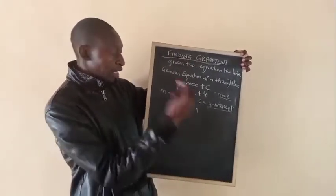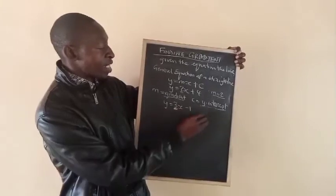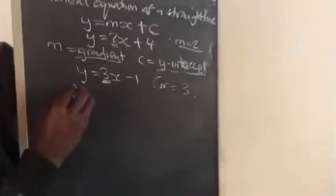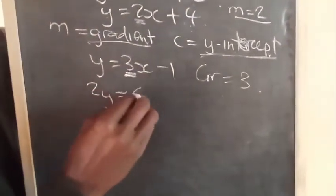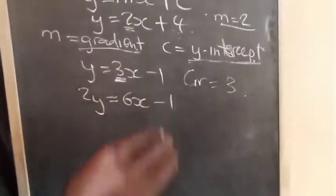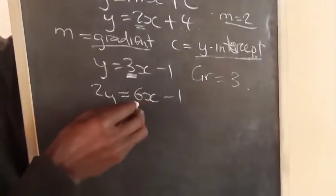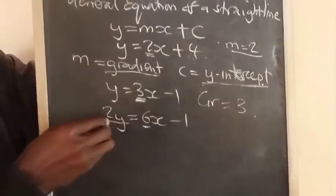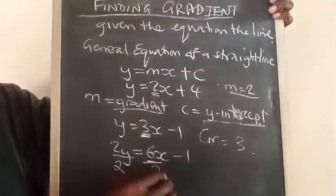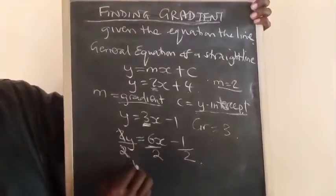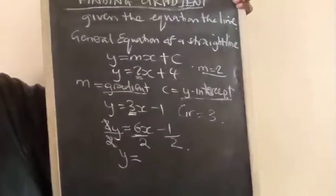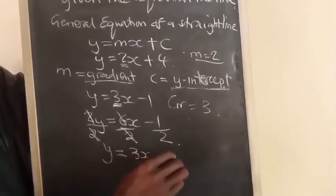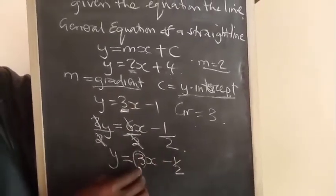Gradient equals 3. Tikapuwa equation y akanzi 2y equals 6x minus 1. Apa gradient yedu is 6. Nenye kutu ukotina 2y tunutotangata divider na 2. Y equals 3x minus half. Saka gradient yedu inige iri.